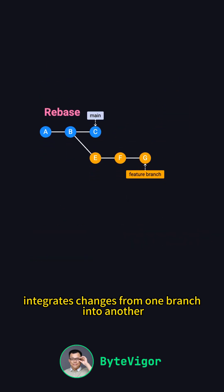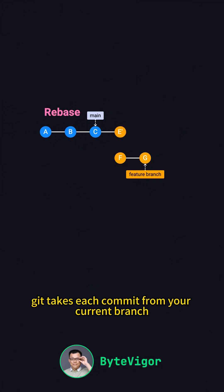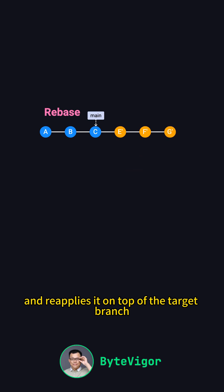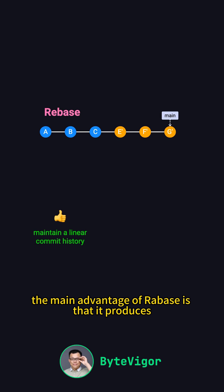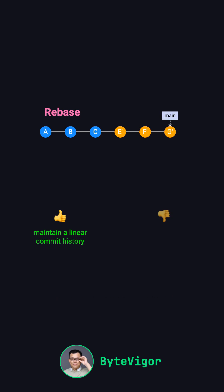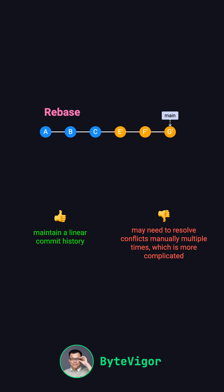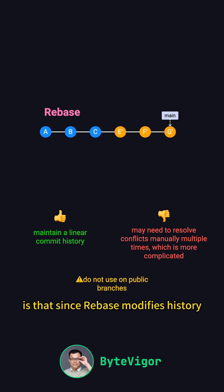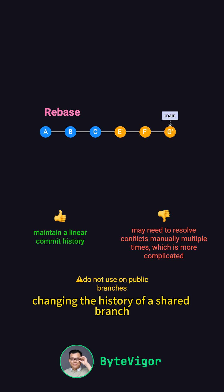Next up is Rebase, which also integrates changes from one branch into another, but in a different way. When you use Rebase, Git takes each commit from your current branch and reapplies it on top of the target branch, as if those commits were originally made there. Since Rebase essentially recreates commits, it changes the commit history. The main advantage is that it produces a cleaner, more linear commit history, which can make tracking changes much easier. However, as each commit is reapplied, you might have to resolve conflicts multiple times, which can be more complex. A key point to remember is that since Rebase modifies history, it's generally not recommended for branches that have already been shared with others, as changing the history of a shared branch could cause conflicts for other developers.